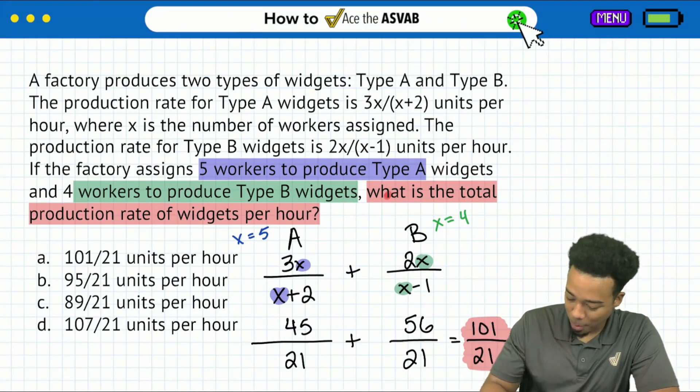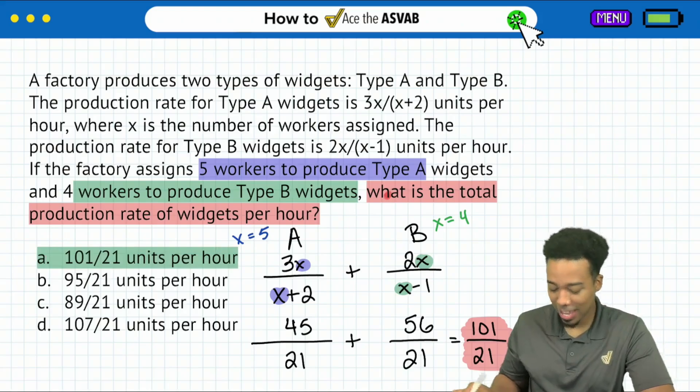101 over 21, that will be the total production rate of widgets per hour. So there we are, my party people. We can highlight the correct answer here as answer choice A. And there we go.